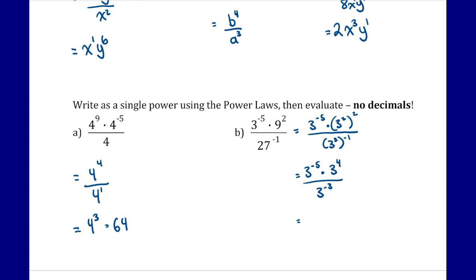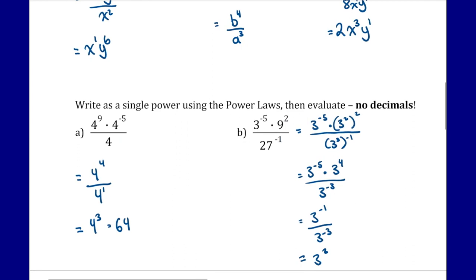Now simplify the top: 3 to the power of negative 5 times 3 to the power of 4 — add the exponents: negative 5 plus 4 is negative 1. Dividing by 3 to the power of negative 3, we subtract exponents: negative 1 minus negative 3 is 2, giving 3 to the power of 2. Evaluating, 3 squared is 9.